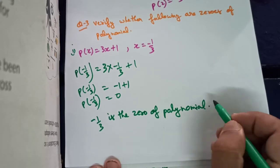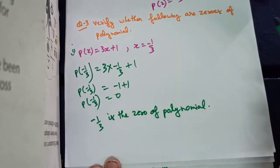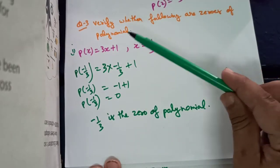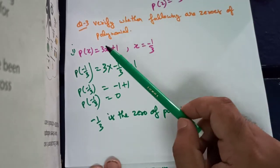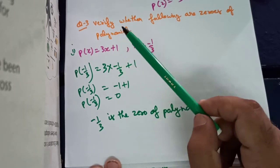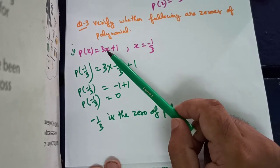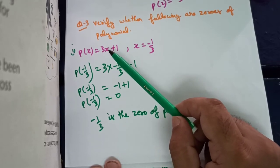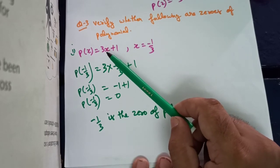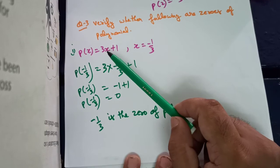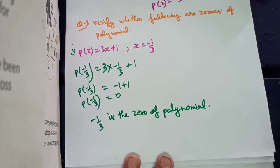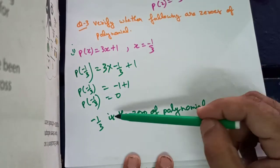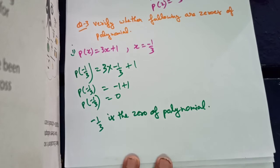Since minus 1 by 3 is the zero of the polynomial, we note that 3x plus 1 is a binomial — a polynomial with two terms — and it is a linear polynomial with degree equal to 1. Since the number of zeros equals the degree of the polynomial, and the degree is 1, there is only one zero. So minus 1 by 3 is the zero of the polynomial.